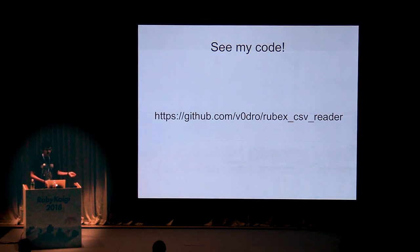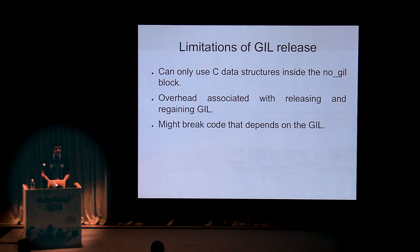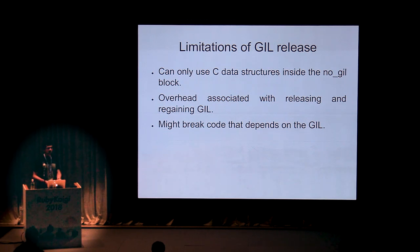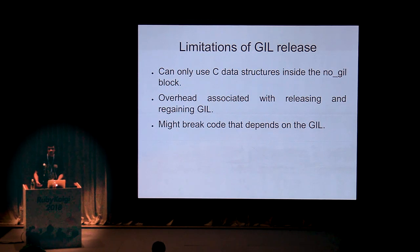You can see this code at the repo wadro/rubex-csv-reader, and you can play around with it to see how it actually works. The limitations of GIL release are that you can only use C data structures inside the no_gil block. If you use Ruby methods, it will give you a segmentation fault because Ruby does not support running Ruby methods or objects outside of the GIL. You also need to be careful because if this code runs alongside code that depends on the GIL, that code will most probably break.